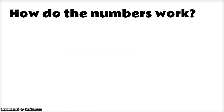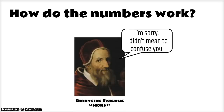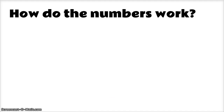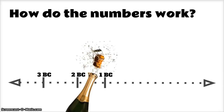What's even more confusing to school children is how these dates work. Think of time as a number line. All the years that came before Christ are counting down to his birth — or if you're a mathlete, those are negative numbers. All the years after the birth of Jesus go up — these are positive numbers.